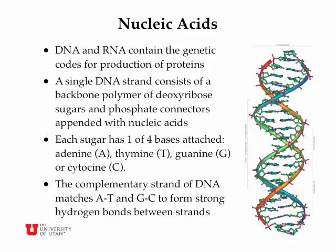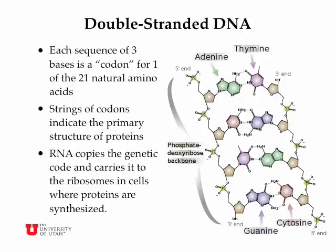RNA molecules can read this chain and therefore transcribe the code for producing proteins. Each sequence of three bases is called a codon, and that codes for one of the 21 naturally occurring amino acids. So strings of these codons, or groups of three bases, indicate the primary structure or the linear structure of a protein. RNA molecules copy the genetic code from the DNA, which lies in the nucleus of cells, and carry it to the ribosomes, which are in the cellular material outside the nucleus, where other types of RNA synthesize the proteins from this genetic code.